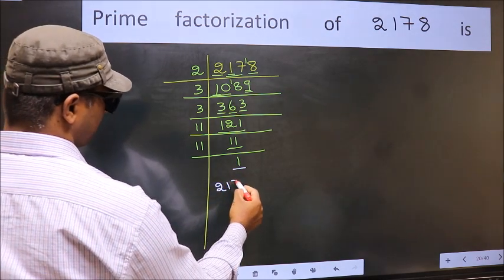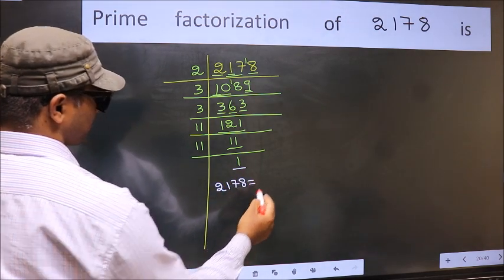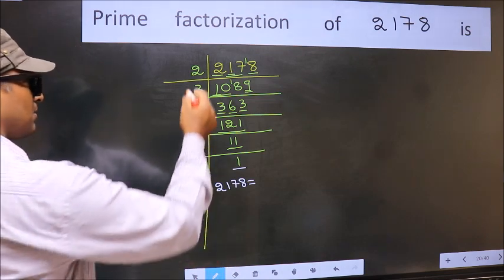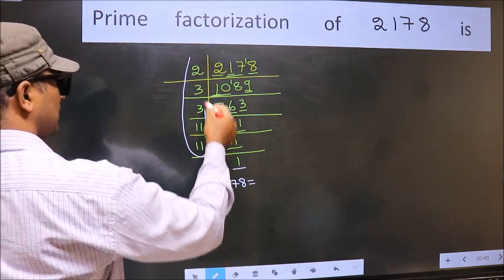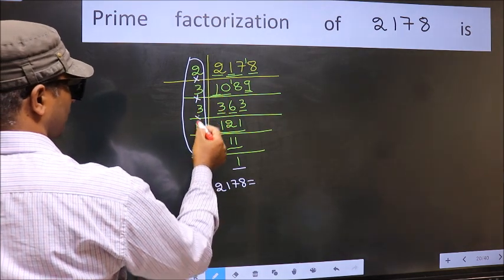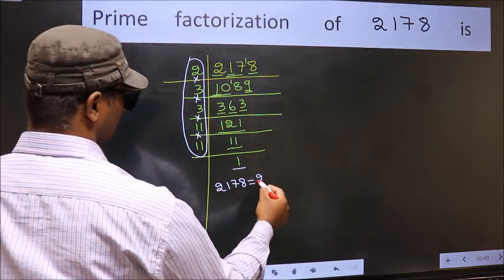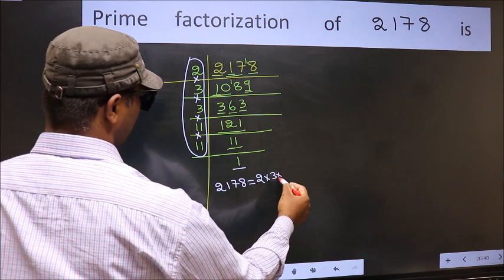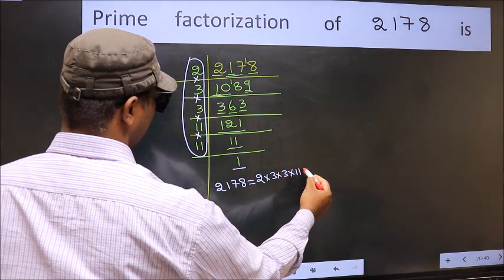So, the prime factorization of 2178 is the product of these numbers. That is, 2 into 3 into 3 into 11 into 11. This is the prime factorization of 2178.